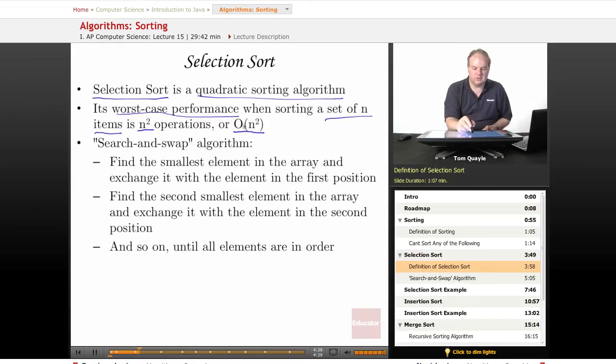In computer science, we use something called the big O notation to indicate the performance of an algorithm. And big O stands for order. And this algorithm would be an order n squared algorithm, meaning that for a set of n items, the worst case performance would be n squared operations to be able to sort n items.